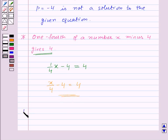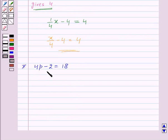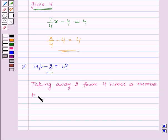Now let's see how to write a given equation, say 4p minus 2 is equal to 18, in the form of a statement. In this equation, when we take away 2 from 4p, then we get 18. So taking away 2 from 4p means 4 times a number p gives 18. So this is the required statement for the given equation.